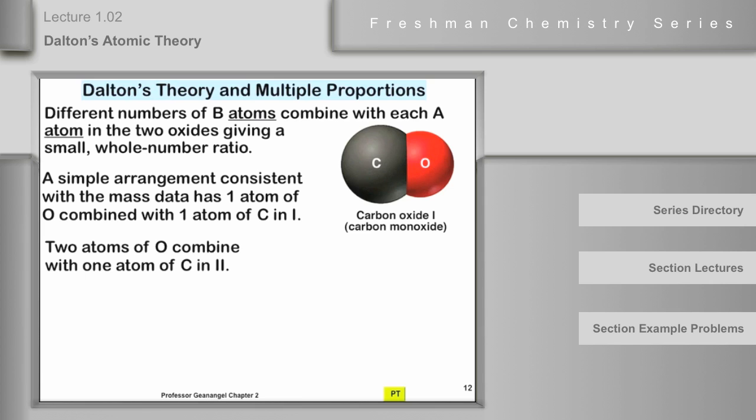And then, if we compare that to carbon oxide 2, if carbon oxide 2 simply had two oxygen atoms per carbon, then it would follow immediately that the oxygen mass to carbon mass ratio in carbon oxide 2 would be twice as great as the oxygen mass to carbon mass in carbon oxide 1. Two oxygen atoms have a mass twice as much as one oxygen atom.